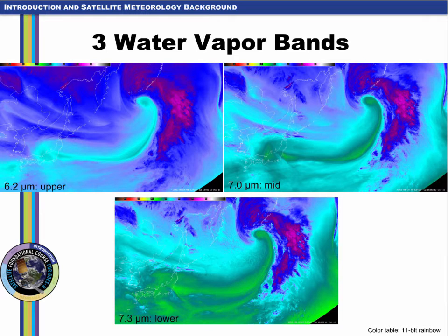The brightness temperatures in the 6.2 micron band being colder makes sense since the weighting function peaks at a higher altitude than the other two bands. Also note the brightness temperatures are generally colder further north due to the greater viewing angle at higher latitudes. One useful application of the 6.2 micron channel is assessing the relative depth of subsidence. For weaker systems, it may not be as noticeable in the upper-level water vapor channel. Recall that the 6.5 micron channel on the current GOES lies between the GOES-R 6.2 and 7.0 micron channels. The best practice is to use them in tandem to get a better three-dimensional perspective of features such as troughs, ridges, jet streams, and short waves. In the 7.3 micron band, brightness temperatures are generally warmer than the other two channels since the weighting function peaks at a lower altitude.